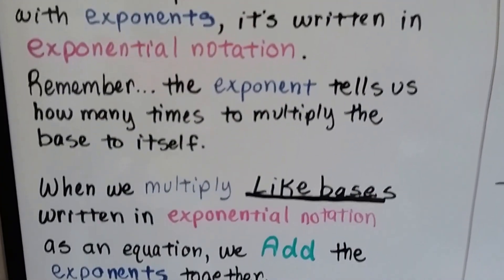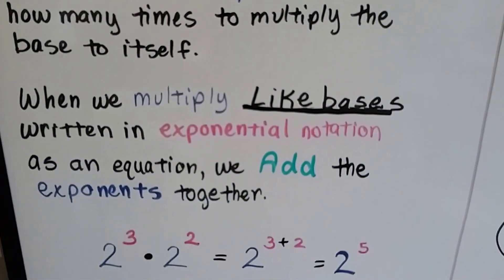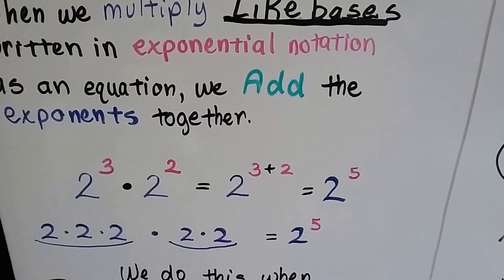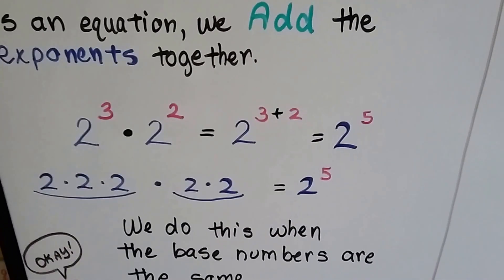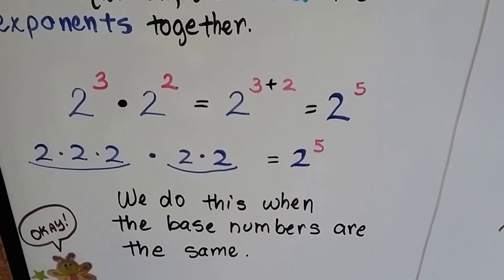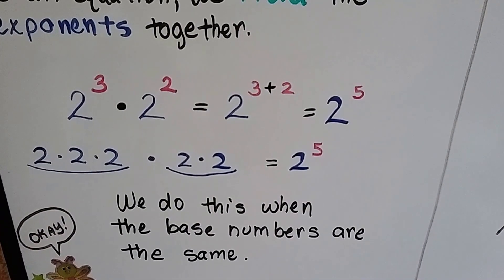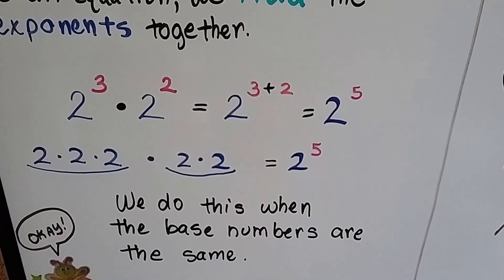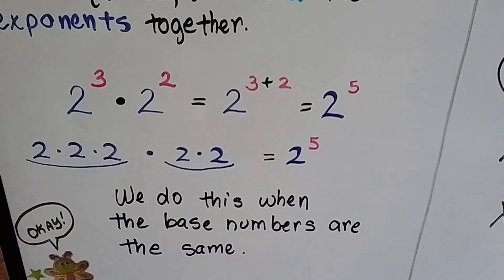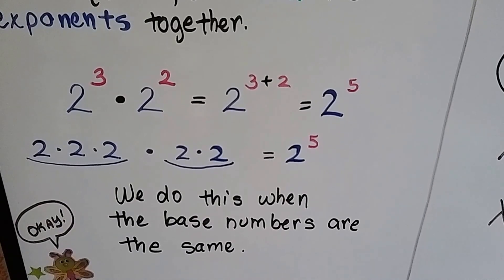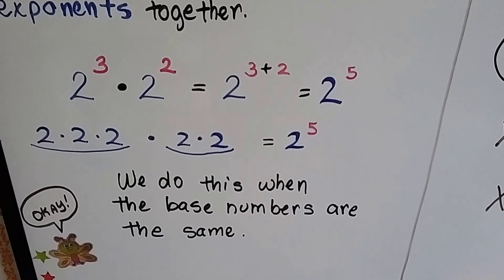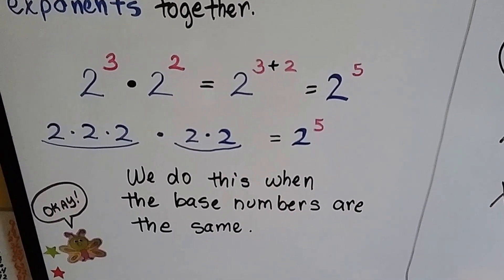When we multiply like bases written in exponential notation, we add the exponents together. 2 to the third power times 2 to the second power is equal to 2 to the third plus second power, so we get 2 to the fifth power. It's 2 times 2 times 2 multiplied by 2 times 2. We do this when the base numbers are the same.